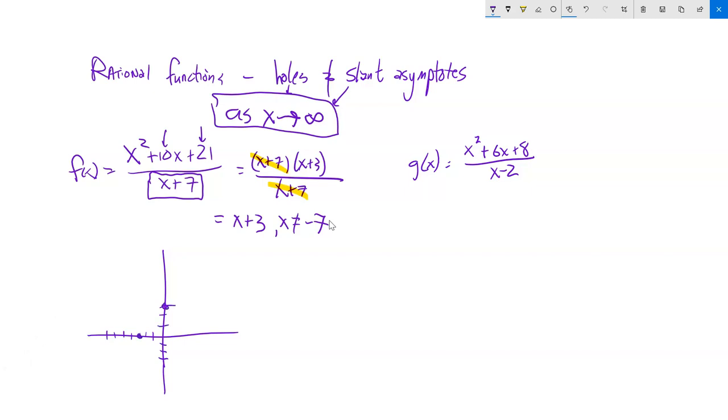x plus 3, that line looks like this. It's slope-intercept form, so slope of 1, intercept of 3. So it goes through 0, 3, goes through negative 3, 0. And it's just this line. But what happens is, when x is negative 7, right here, there's a hole.